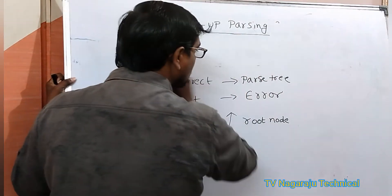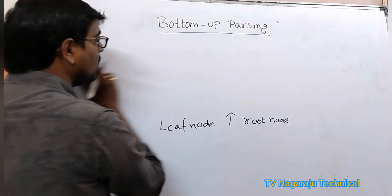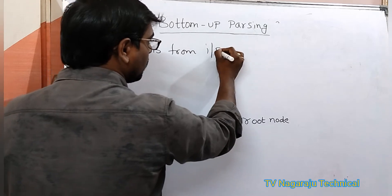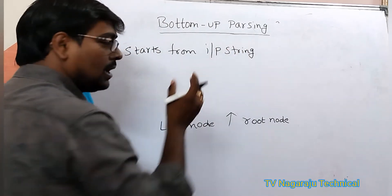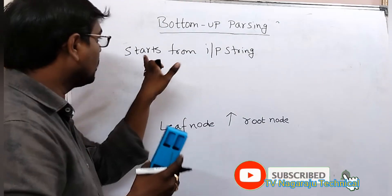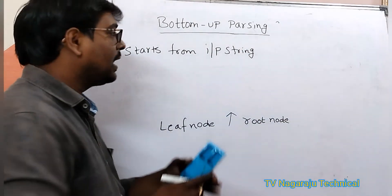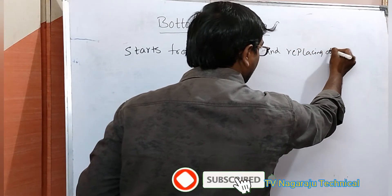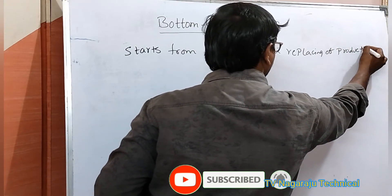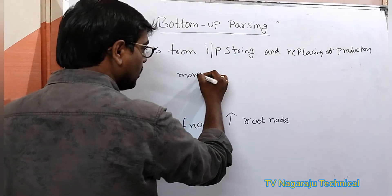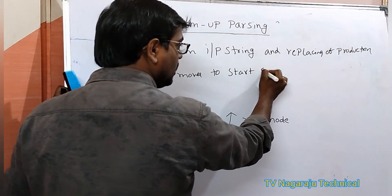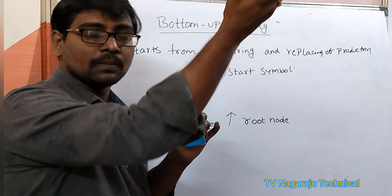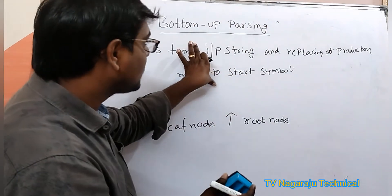Coming to the notation of the parse tree: how a parse tree is generated? A parse tree starts from the input string. The input string moves to the starting symbol — that means the input string is converted into the starting symbol in the reverse direction. That is called bottom-up parsing.